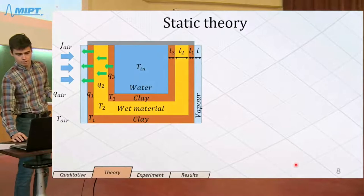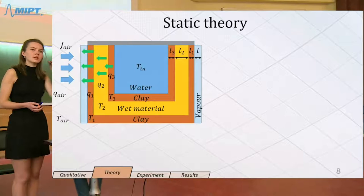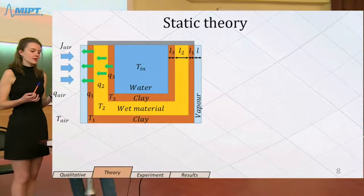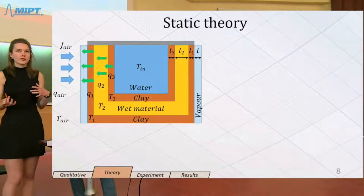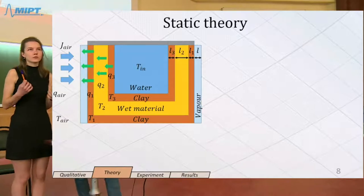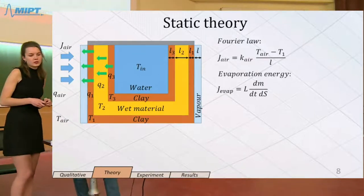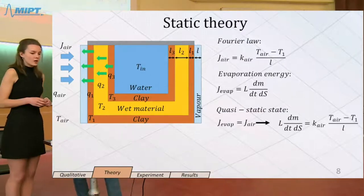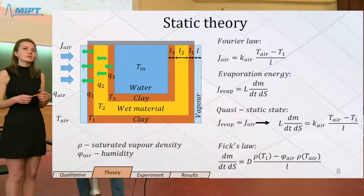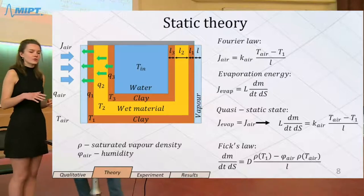Now we're moving to the first part of our theory, which we are applying to the quasi-static state of our system. We want to derive the temperature difference between air and the whole pot. In order to do that, we write heat expressions for heat fluxes, and in quasi-static state they are equal to each other. It's important to note that in quasi-static state, the amount of water evaporated from liquid is equal to the amount diffused from the boundary layer. The boundary layer is a layer of saturated vapor near the pot.